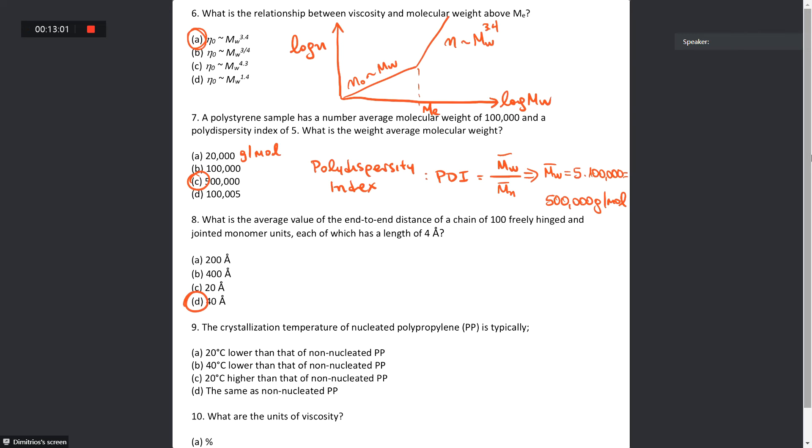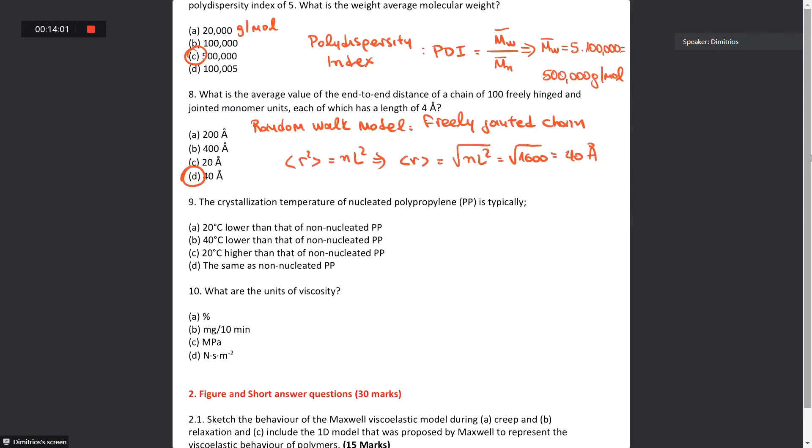Indeed, the correct answer is D, 40 angstrom. This comes as a result of the use of the random walk model, where we have a freely jointed chain. In this case, a relationship between distance and length is this one. You are going to expect that in some multiple choice questions in the real exam, you might have to do some very simple calculations. It's not certain, but you might need to do something like that question.